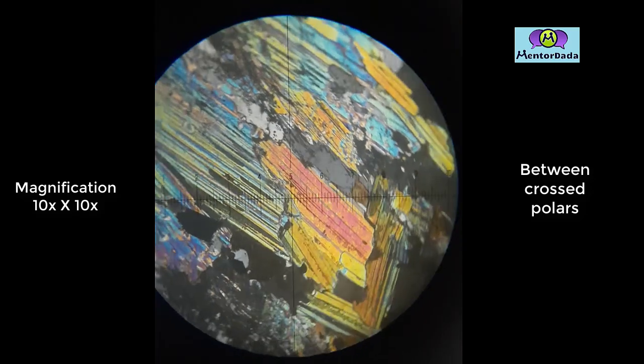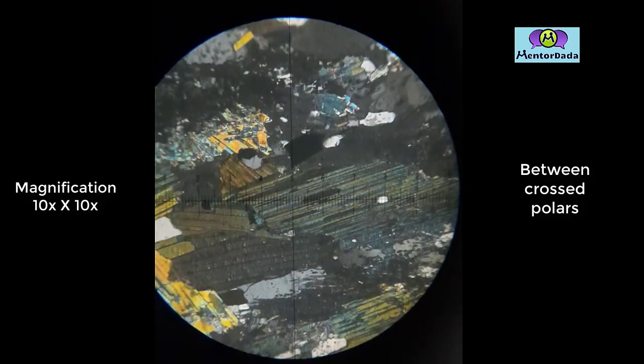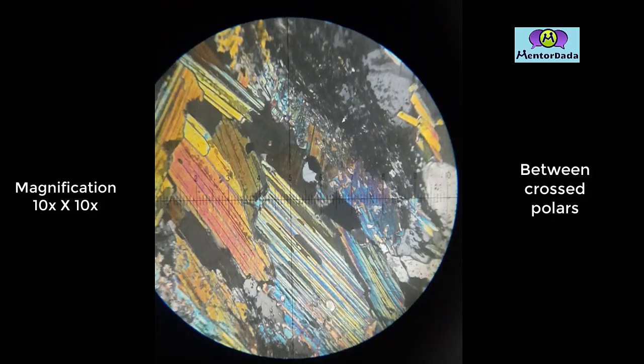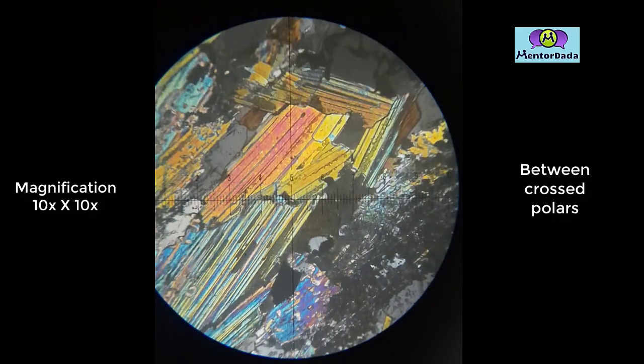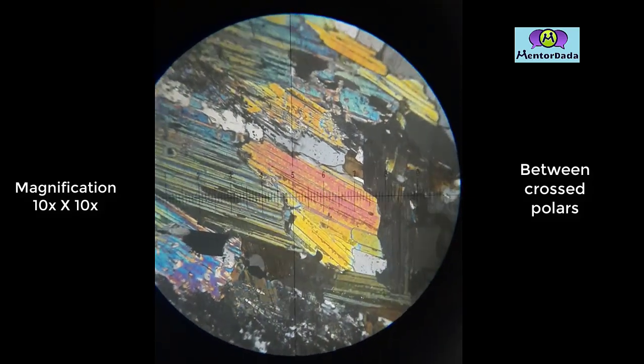Between cross polarizers, the mineral is changing its color as the stage is rotated, so the mineral is anisotropic.